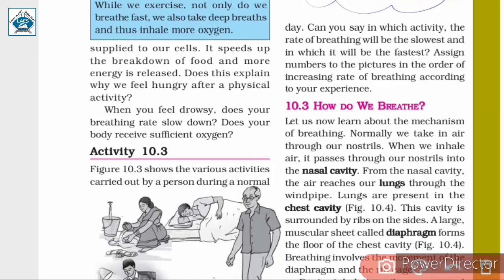Let us continue Chapter 10: Respiration in Organisms. In Activity 10.3, Figure 10.3 shows the various activities carried out by a person during a normal day. We need to identify in which activity the rate of breathing will be the slowest and in which it will be the fastest, and assign numbers to the pictures in the order of increasing rate of breathing.